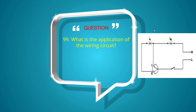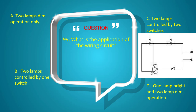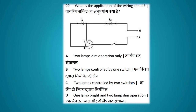What is the application of the wiring circuit shown? Options: 2 lamp dim operation only, 2 lamps controlled by 1 switch, 2 lamps controlled by 2 switches, 1 lamp bright and 2 lamp dim operation. The answer is 1 lamp bright and 2 lamp dim operation.